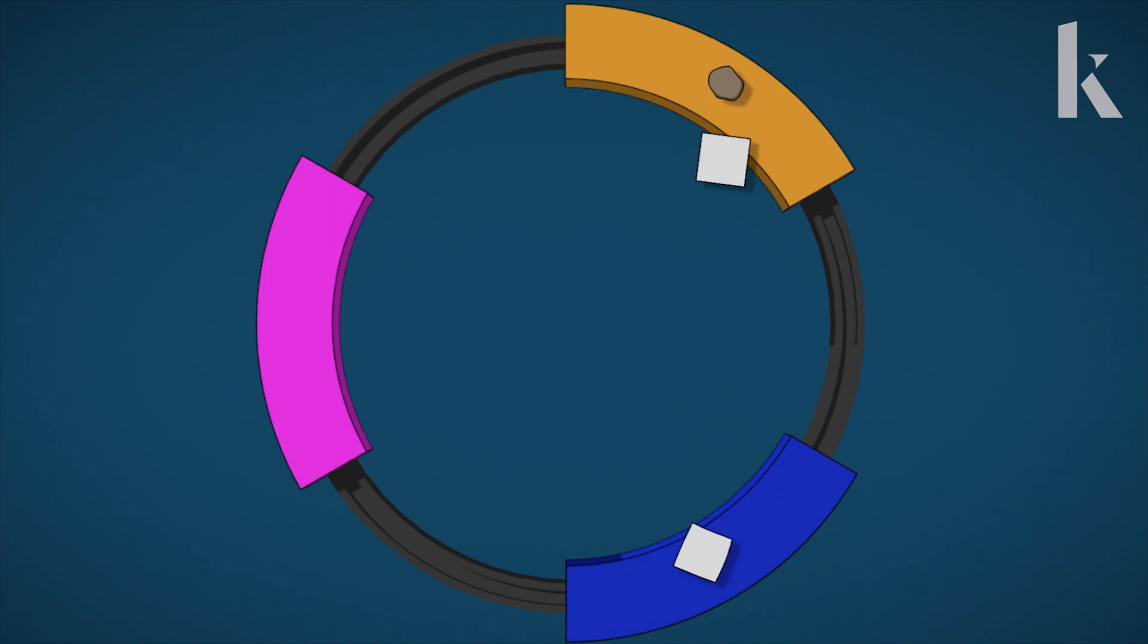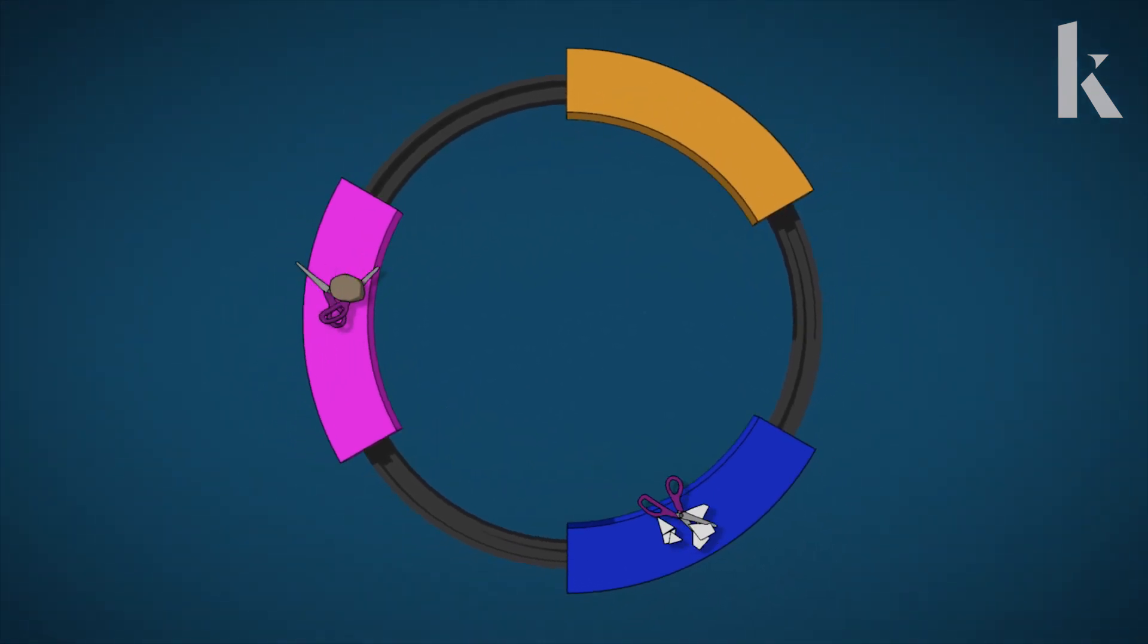With rock turned off, gene two, scissors, starts making protein again. And scissors protein turns off the paper gene. Ta-da! Rock is now freed up and the cycle starts again.